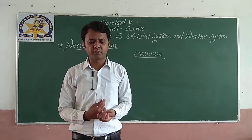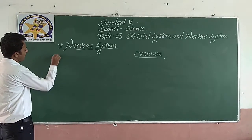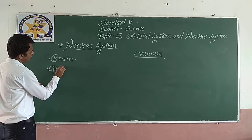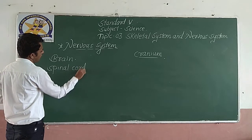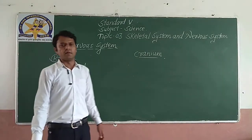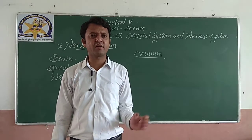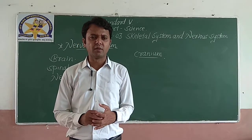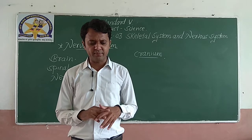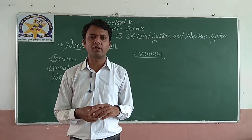Now the brain is made up of three parts, each carrying different kinds of tasks. The three parts are cerebrum, cerebellum, and brain stem, which is also called medulla. Let us discuss the functions of these three parts.